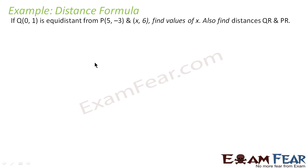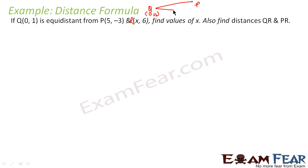The question says Q(0,1) is equidistant from P(5,-3) and R(x,6). We have defined the value of x. Q is the point (0,1), P is the point (5,-3), and R is the point (x,6).